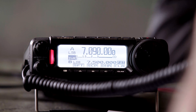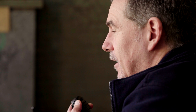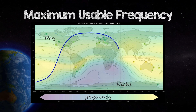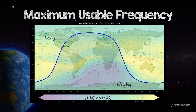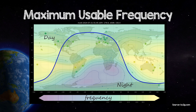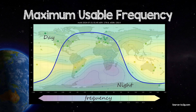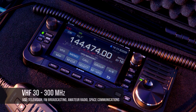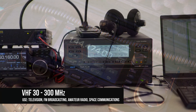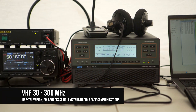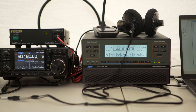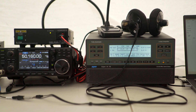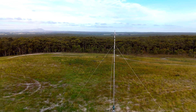The variation in propagation characteristics over the 80 to 10 metre band is considerably different according to the time of day and the levels of ionisation. VHF, or very high frequency, lies between 30 and 300 MHz. It propagates predominantly by line of sight, or scatter from the ionosphere.